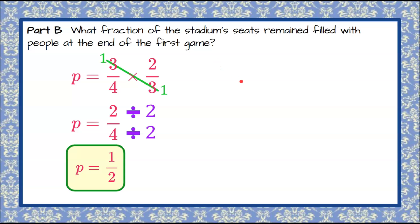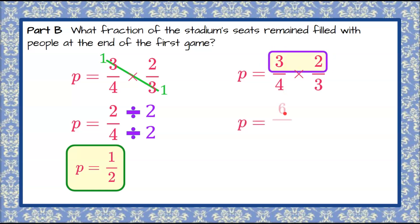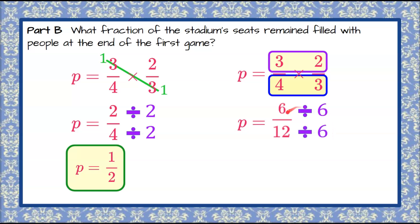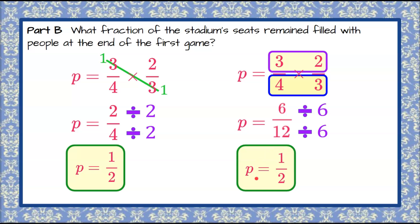So half the stadium is still filled at the end of the game. Here's a second way you might have multiplied: multiply the numerators first — three times two is six — then multiply the denominators — four times three is twelve. Notice that both the numerator and denominator have a factor of six, so divide both by six: six divided by six is one, twelve divided by six is two. We still find that the fraction of the stadium seats that remained filled was one-half.